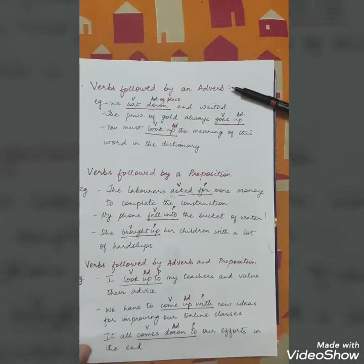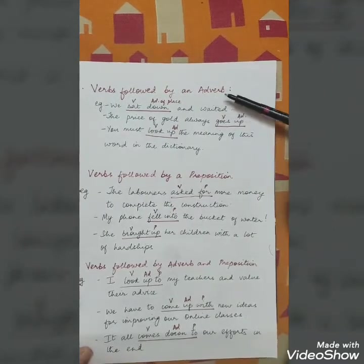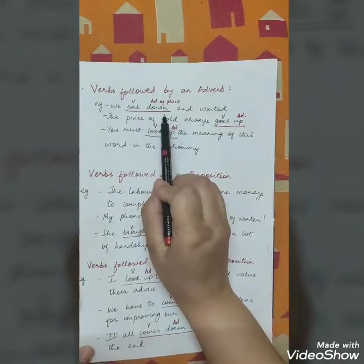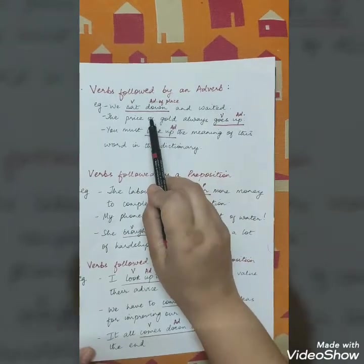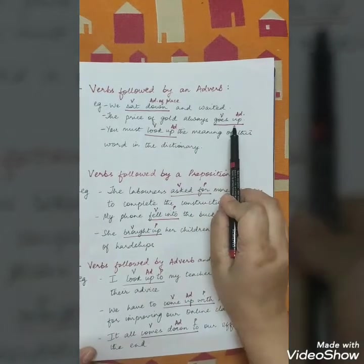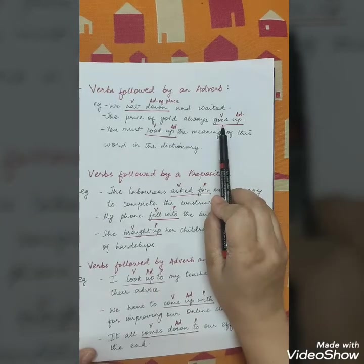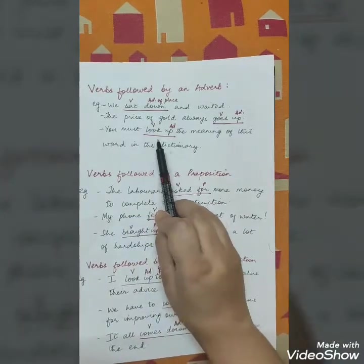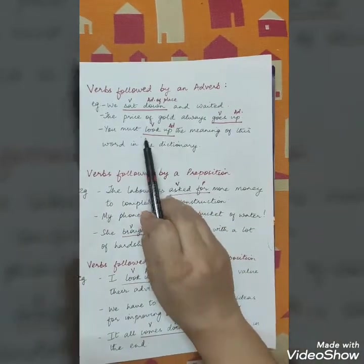The first kind is verbs followed by an adverb. For example, 'we sat down and waited' — here 'sat down' is a phrasal verb containing the verb 'sat' and the adverb of place 'down'. Another example: 'the price of gold always goes up' — 'goes up' is a phrasal verb which has the verb 'goes' and the adverb 'up'.